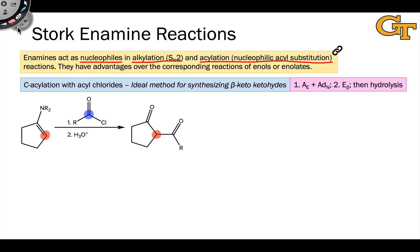When we treat an enamine with an acid chloride or an acyl chloride followed by hydrolytic conditions, H3O+, a reaction occurs between the electrophilic carbonyl carbon and the nucleophilic alpha carbon of the enamine.